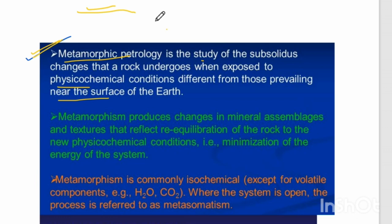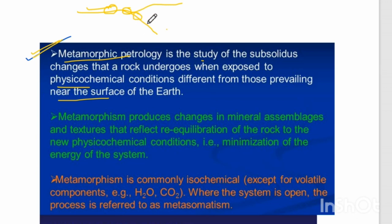Suppose if there is a rock — shale — on the surface, and subduction of the oceanic crust beneath the continental crust is going on, then this shale will be converted into phyllite, then into schist, then gneiss. These conditions are different from those at the Earth's surface. Metamorphism is commonly isochemical — elements are not gained or lost, only the mineral is transformed.